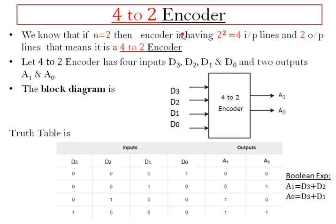Next I am taking a 4-to-2 encoder circuit. Why 4-to-2? Because if n equals 2, the encoder has 4 input lines and 2 output lines. So 4 input values are represented using two binary numbers. The inputs are D3, D2, D1, D0 and the outputs are A1, A0. This is the block diagram of the 4-to-2 encoder, and I am writing the truth table with D3 D2 D1 D0 as inputs and A1 A0 as outputs.